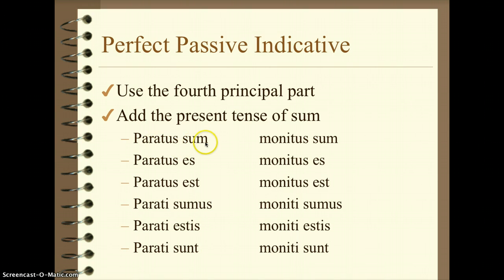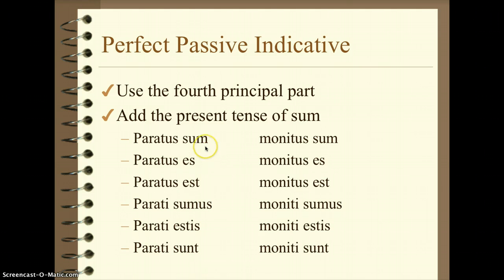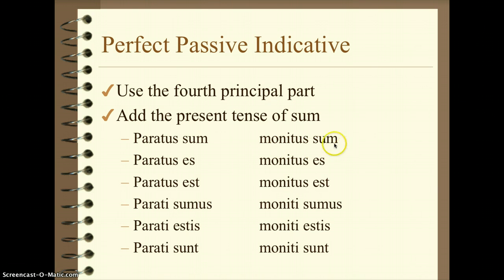So for the first form with sum, the M ending tells us it's I: I have been prepared. You have been prepared. He, she, it has been prepared. We have been prepared. Y'all have been prepared. They have been prepared. Translate sum as have when it's with a fourth principal part. So with monitus: I have been warned — been is attached to this form since this is what makes it passive. I have been warned, you have been warned, he/she/it has been warned, and so on.